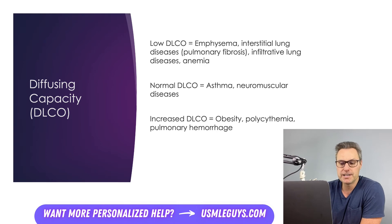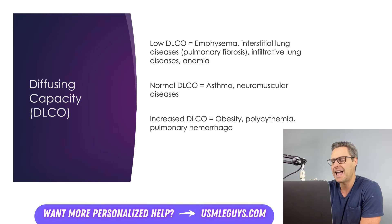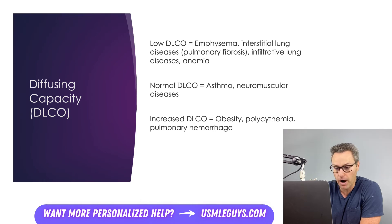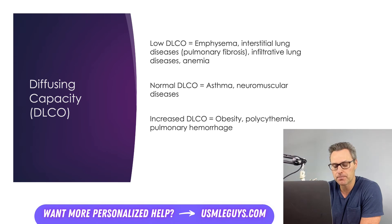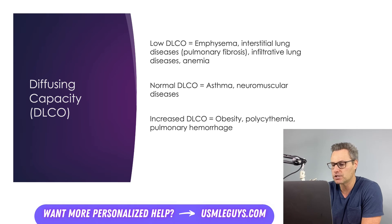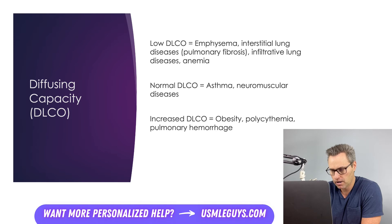The pulmonary conditions with true diffusion issues are interstitial lung diseases and infiltrative lung diseases, where the lungs are fibrotic, where the lung parenchyma has been replaced, and gas exchange is impaired. Also, remember, in emphysema, there's a decrease in the diffusing capacity because of a loss of alveolar membrane surface area. Just think of those hyperlucent lungs on x-ray — there's less alveolar surface area that results in less diffusion.